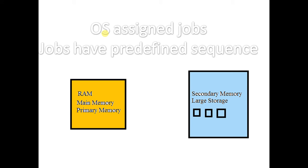Jobs have a predefined sequence and are executed on the basis of a first-come-first-serve algorithm. The basic overview is that we have RAM and secondary memory. Secondary memory is basically the hard disk — large storage devices which contain lots of data.